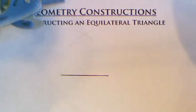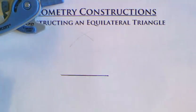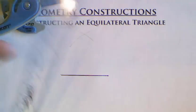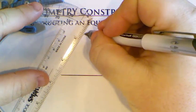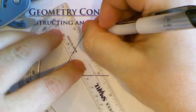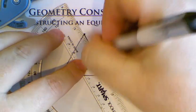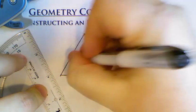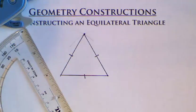Where those two arcs intersect is the last vertex to my triangle, so connect the dots and make your equilateral triangle.